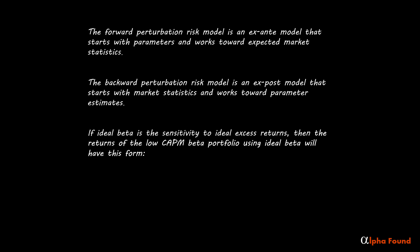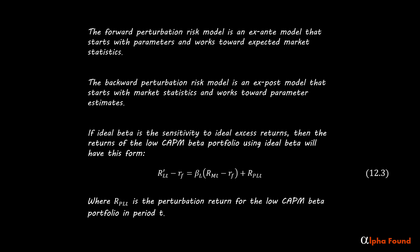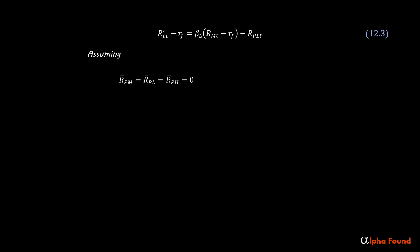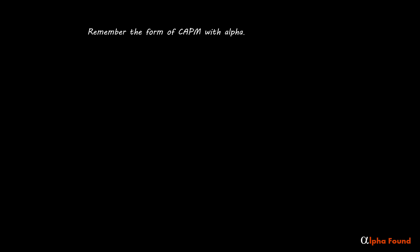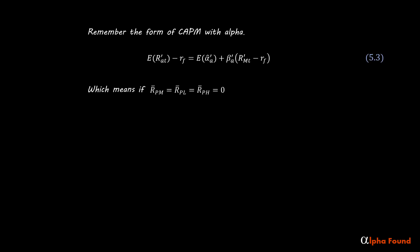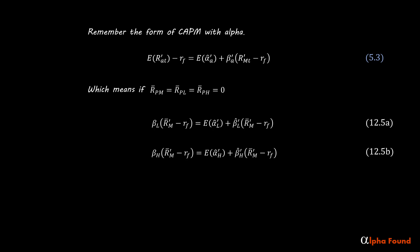If ideal beta is the sensitivity to ideal excess returns, then the returns of the low CAPM beta portfolio using ideal beta will have this form, where R sub PLT is the perturbation returns for the low CAPM beta portfolio in period T. If we assume that the average perturbation returns are zero, then the expected average return of the low CAPM beta portfolio is equal to the ideal beta times the excess return of the market, because the average ideal returns equal the average market return when the average perturbation is zero.